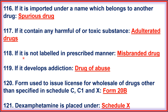116. If it is imported under a name which belongs to another drug, it is a Spurious Drug. 117. If it contains harmful or toxic substance, it comes under adulterated drug. 118. If it is not labelled in the prescribed manner, it is a misbranded drug. 119. If it develops addiction, it is a drug of abuse. 120. Form used to issue license for wholesale of drugs other than those specified in Schedule C, C1, and X is Form 20B.